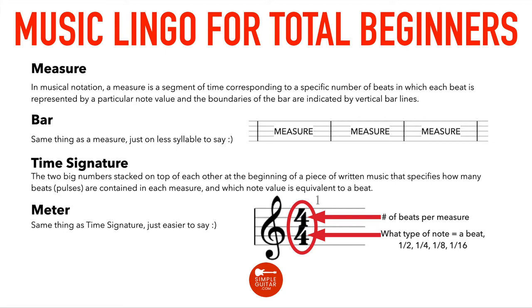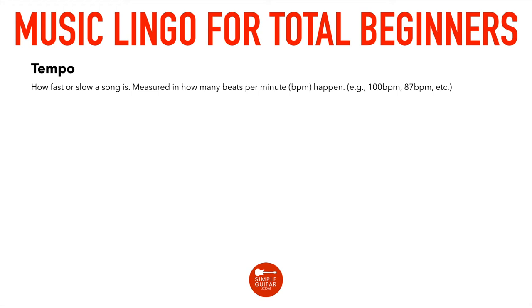Tempo is how fast or slow a song is, measured in beats per minute or BPM. You'll hear that a song is 100 beats per minute or 87 beats per minute. Usually at the beginning of a piece of music at the top, you'll see something like a quarter note equals 120 — meaning the note that gets the beat is equal to 120 beats per minute, which tells you how fast the song moves.